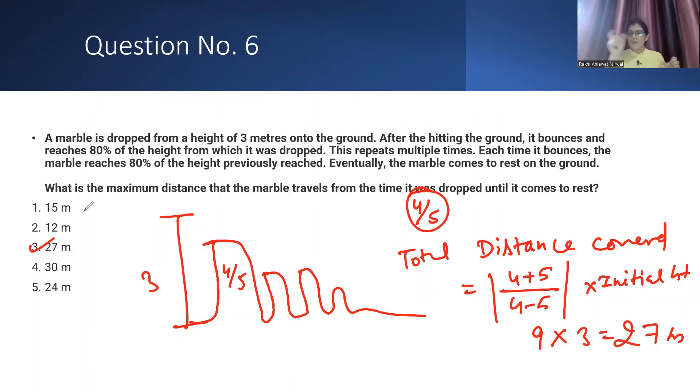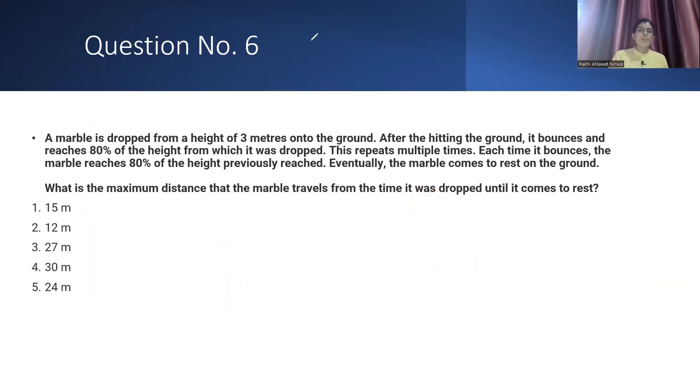So students, think if you know this trick, you can solve this question in hardly 10 or 15 seconds. Whatever bounce back is happening, 4 plus 5, 4 minus 5 times the initial height. This is the total distance covered by ball until it comes to rest. Otherwise, you would have to make a series, use sum of infinite series formula, multiply by 2, which would take time. So use this formula for this particular type of question.